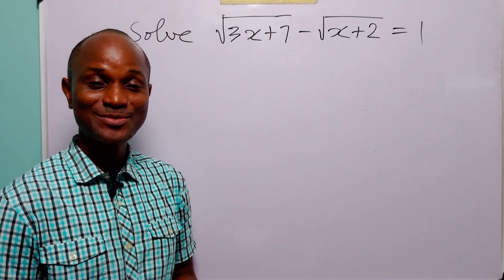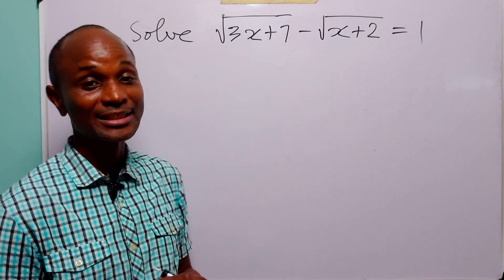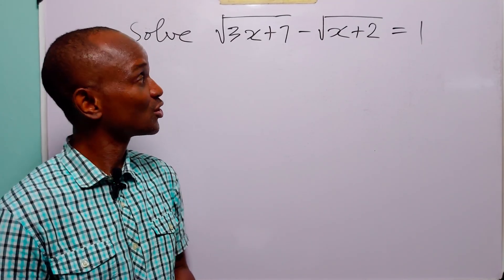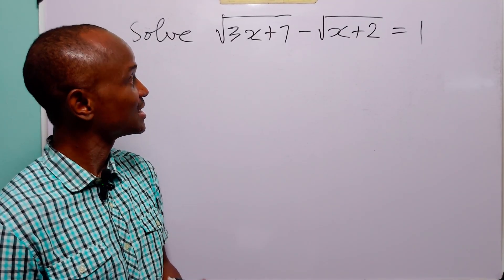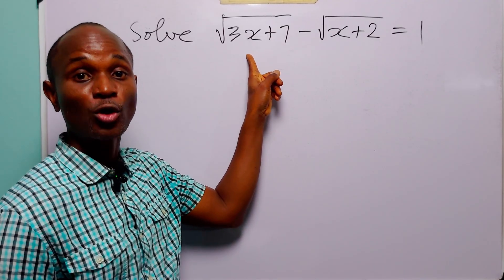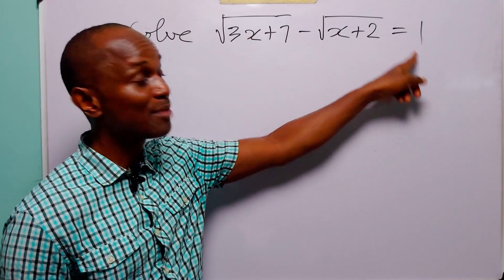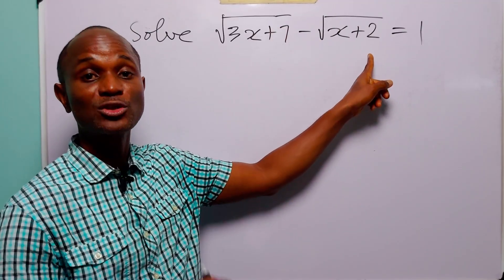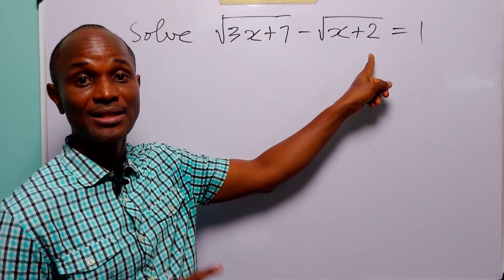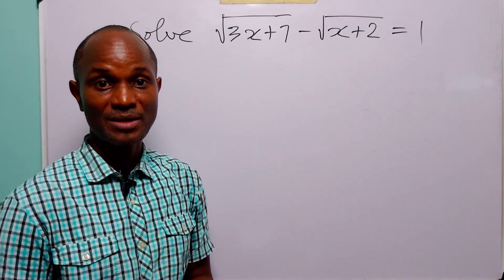Hello and welcome. In this math tutorial our task is to solve the given radical equation. The traditional way of solving such equations is to isolate one radical on one side of the equation, then square both sides of the equation, and continue doing this until there are no radicals left.